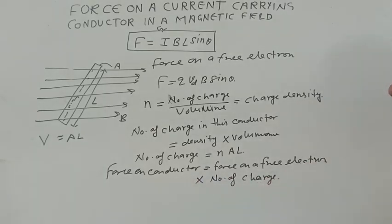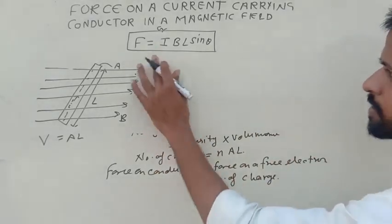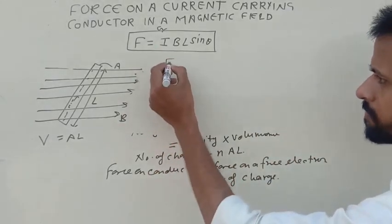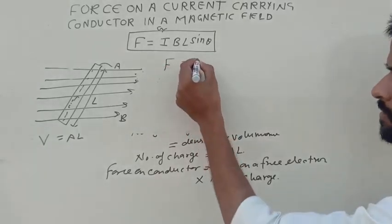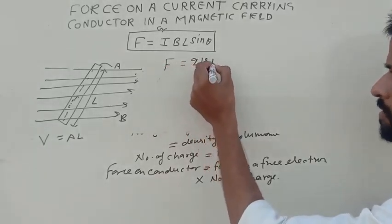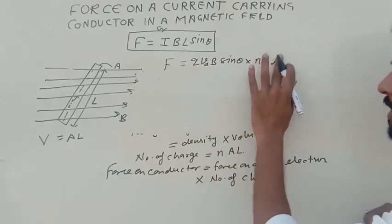So now we can write force on this conductor is given by F equals Q VD B sin theta times N times A times L.